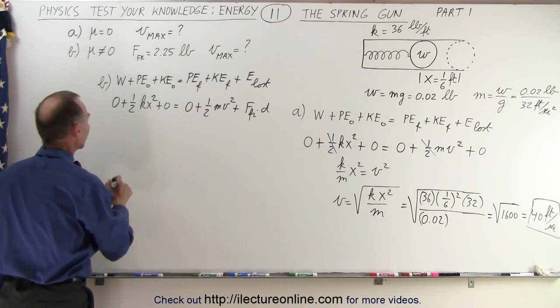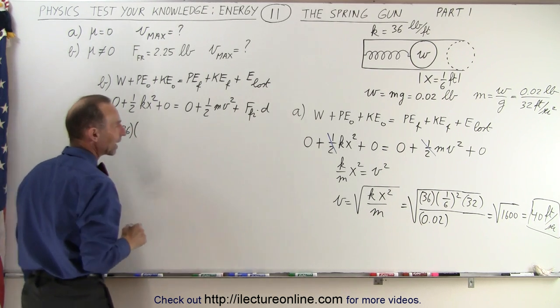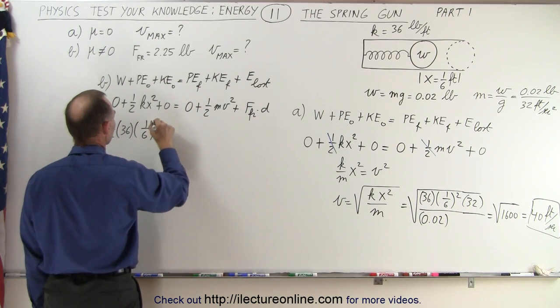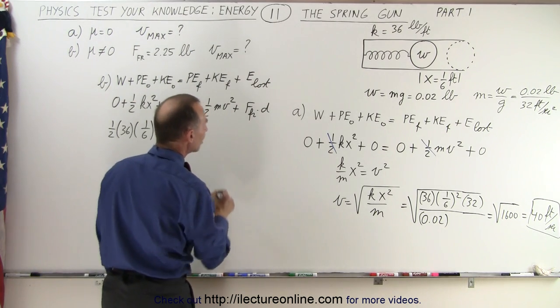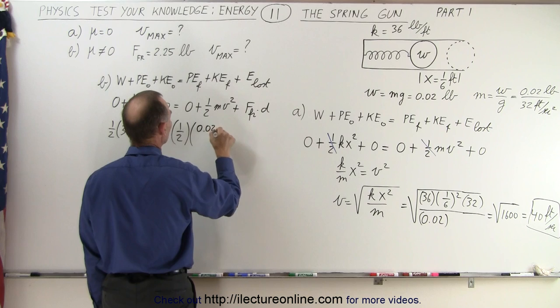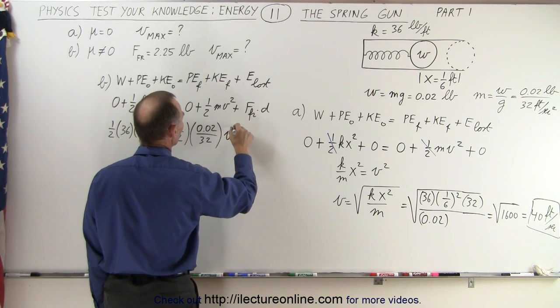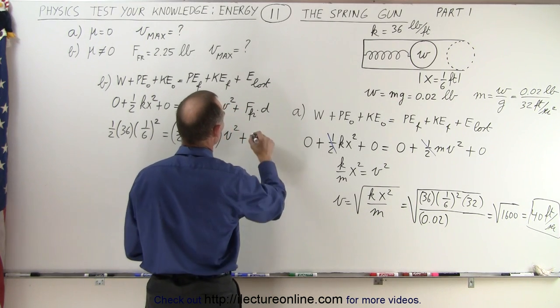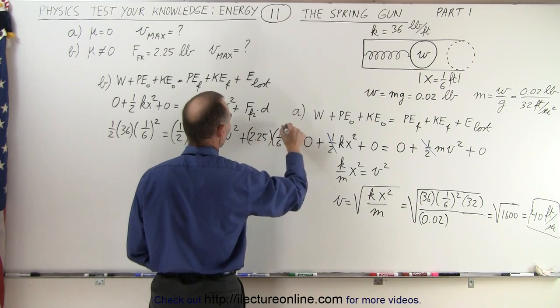All right, so let's finish this up. So we have 1/2 times k which is 36 times x squared, that would be 1/6 squared, is equal to 1/2 times the mass, that would be the weight divided by g which is 0.02 divided by 32 times v squared is what we're looking for, plus the friction force. The friction force would be 2.25 and the distance would be 1/6 of a foot.